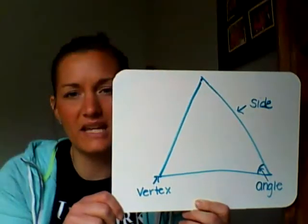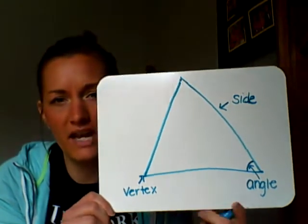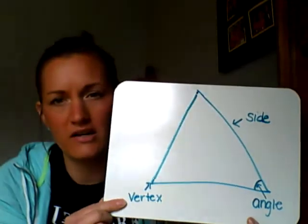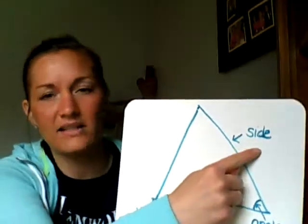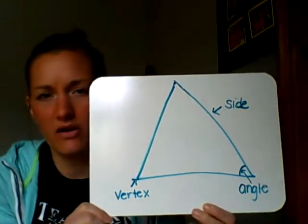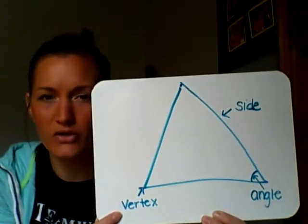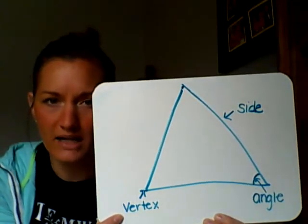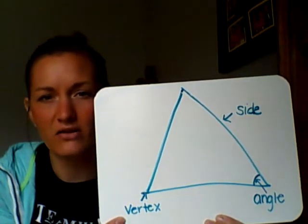So I drew the triangle here, as you can see, and you see some words on there, like vertex, which is here, angle, and then side. The key thing for the vertex is when two lines come together to form a point. That is the vertex.